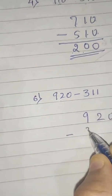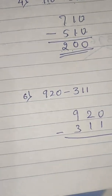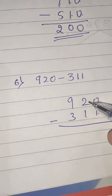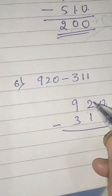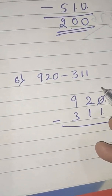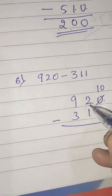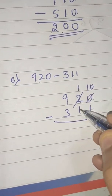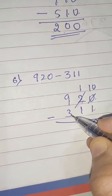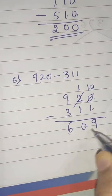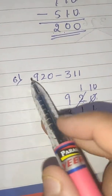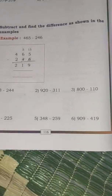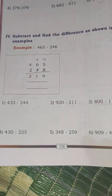Next example: 920 minus 311. At the units place, 0 minus 1 is not possible, so we borrow 1 from the tens place — the 0 becomes 10 and the 2 becomes 1. So 10 minus 1 is 9, then 1 minus 1 is 0, and 9 minus 3 is 6. The difference is 609. In the same way, you only have to try to solve the remaining sums.